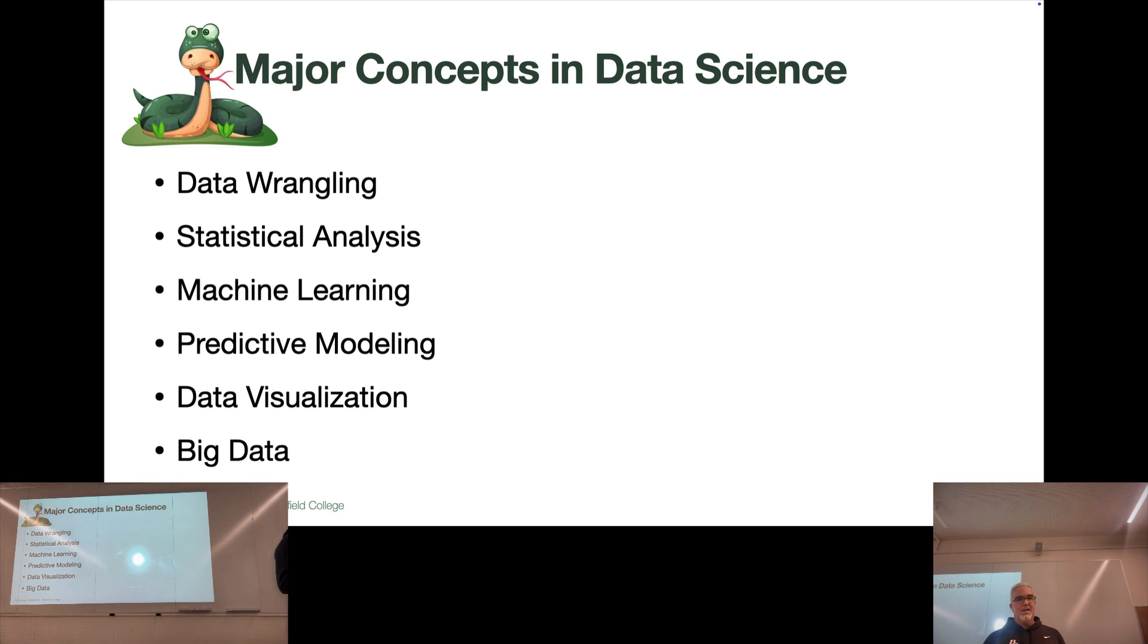So data wrangling says, how do we deal with that kind of stuff? So that's what data wrangling is. Statistical analysis, sort of self-explanatory. It says, how do we use statistics to look at these numbers and get a basic understanding of what's there, what's going on with these? And I'll show you some of that.